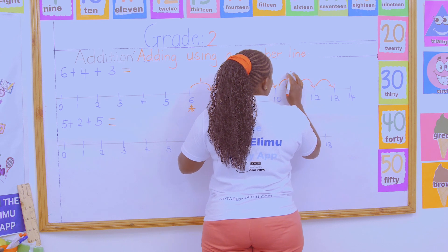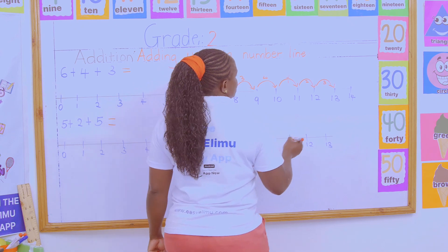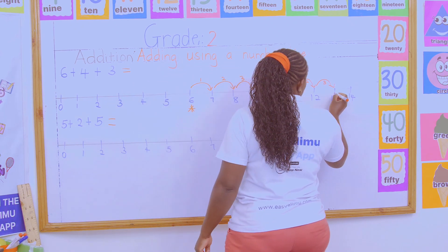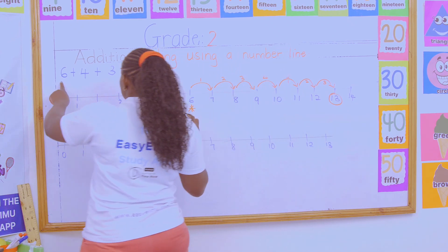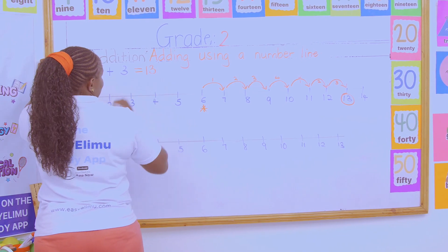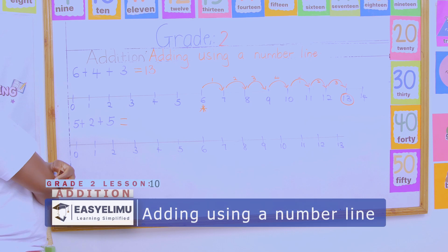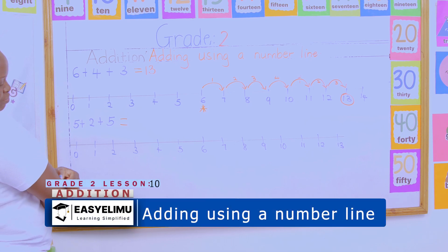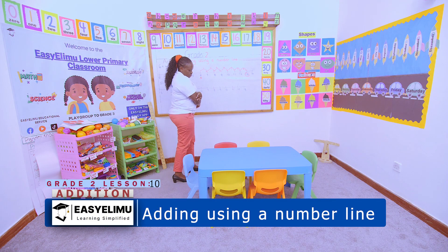Then three more steps: one, two, three. We add the other three more. Where did you stop? We stopped at 13. So in other words, six plus four plus three equals 13.